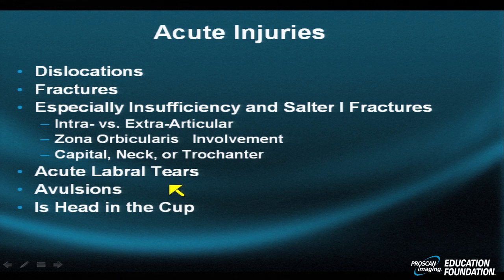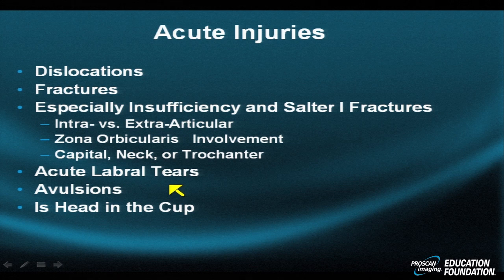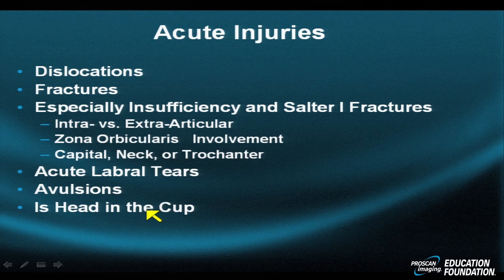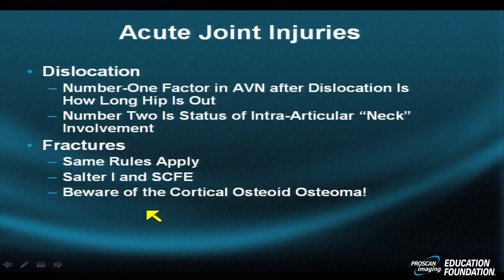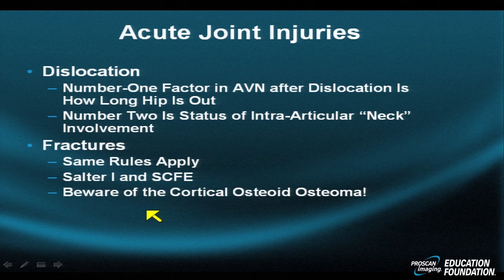Acute injuries should cause a search for labral pathology. One should look for avulsions of key apophyseal structures like the anterior inferior iliac spine or the posterior superior iliac spine. Is the head in the cup when you see it on imaging, or is it still out? The number one factor in determining whether the head crumbles due to vascular insufficiency after a dislocation is how long the head is out of the joint. The number two factor is whether the fracture is intra-articular above the zona abicularis — if it is, this is a poorer prognostic sign.